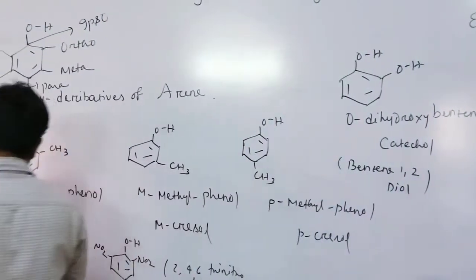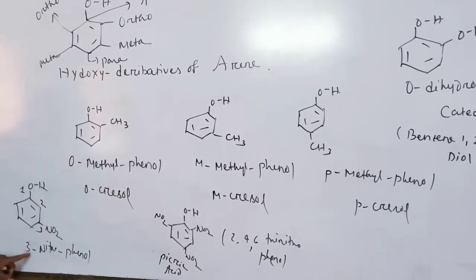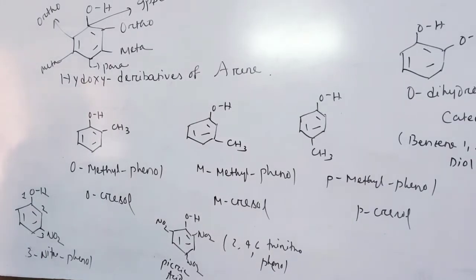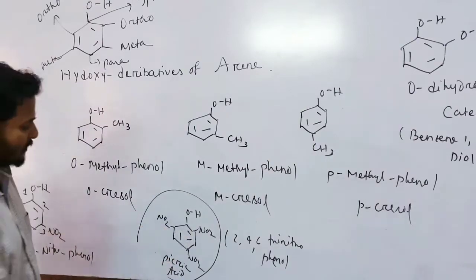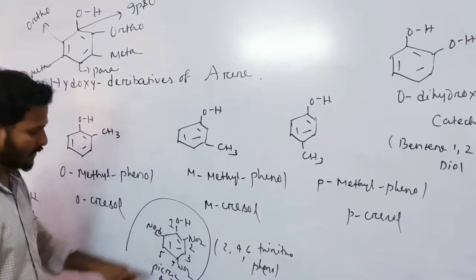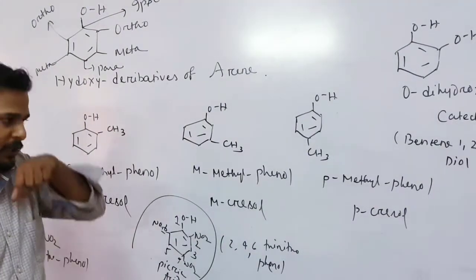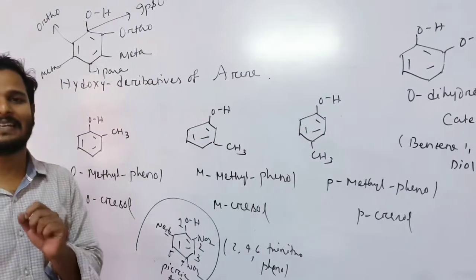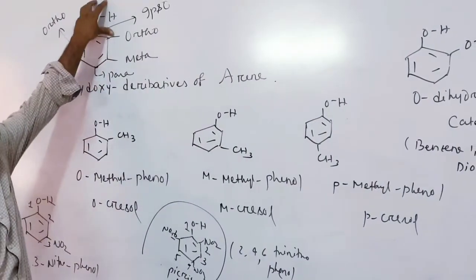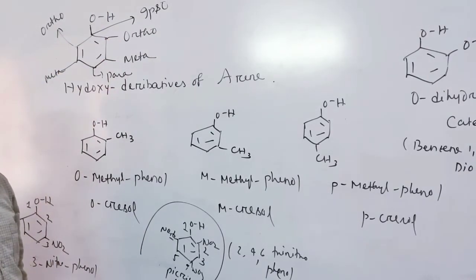Next, if we substitute nitro groups on phenol: m-nitrophenol and o-nitrophenol. If three nitro groups are substituted at positions 2, 4, and 6 on phenol with the OH group predominating, we get 2,4,6-trinitrophenol — which is also called picric acid. Phenol is simply the hydroxy derivative of an aromatic ring; the OH group is a nucleophile that activates the benzene ring.